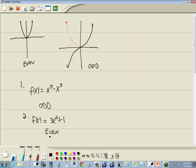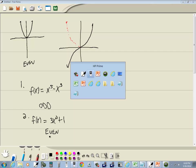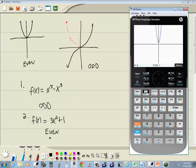So odd, you flip twice. Even, you flip once. And that would be determining whether a graph of a function is even, odd, or neither using HP Prime calculator.